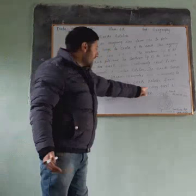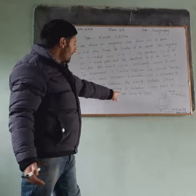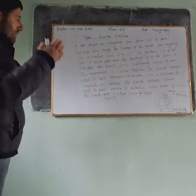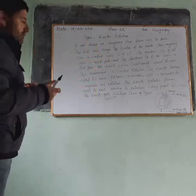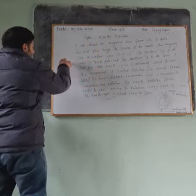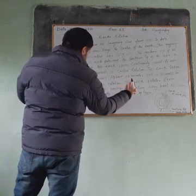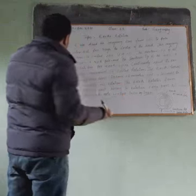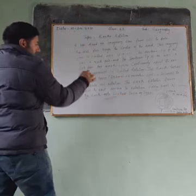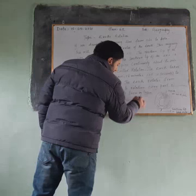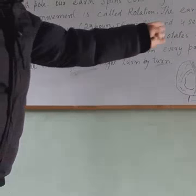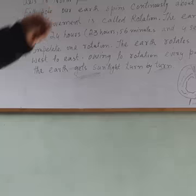Because of rotation, every part of the Earth gets sunlight in turn. As the Earth spins west to east, the side facing the Sun receives light — so it becomes day. The side facing away from the Sun receives no light — so it becomes night.